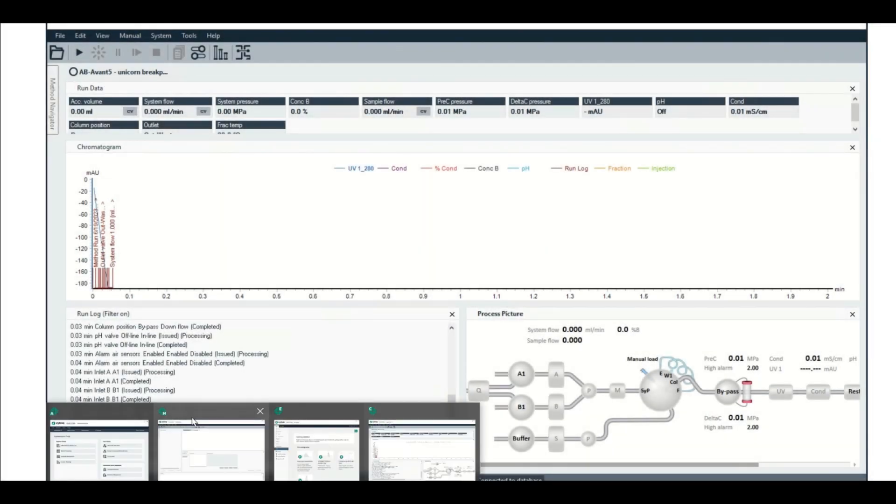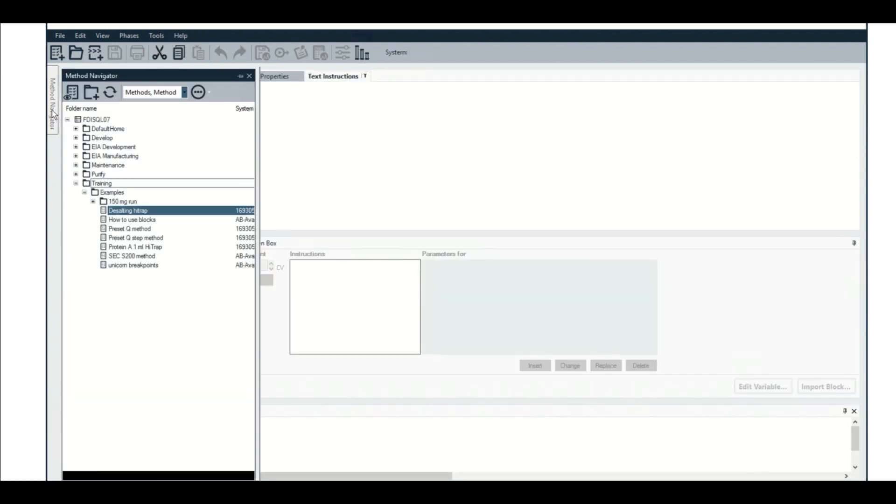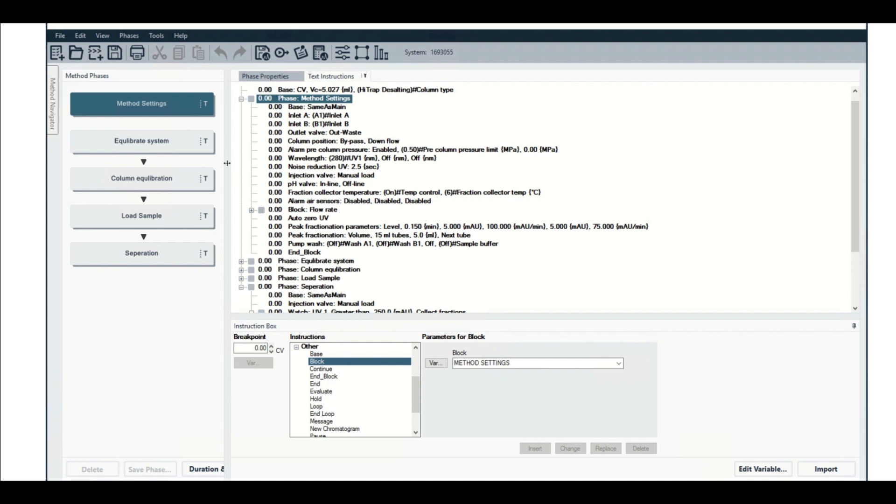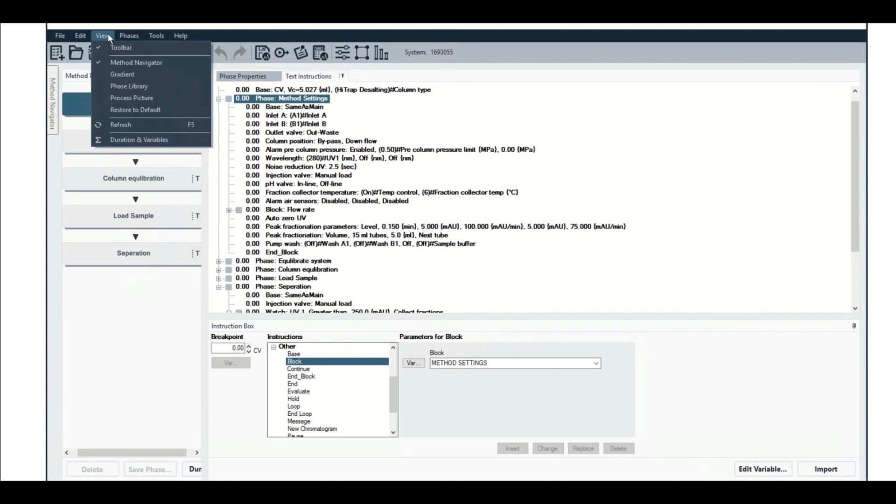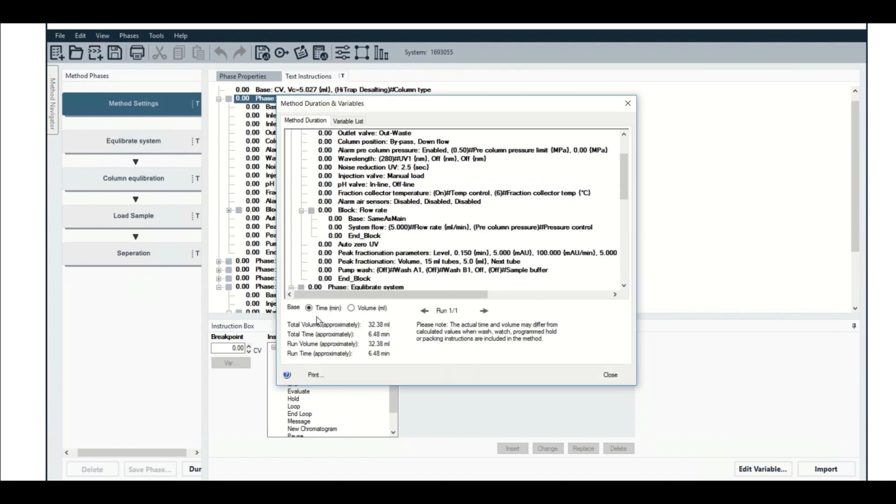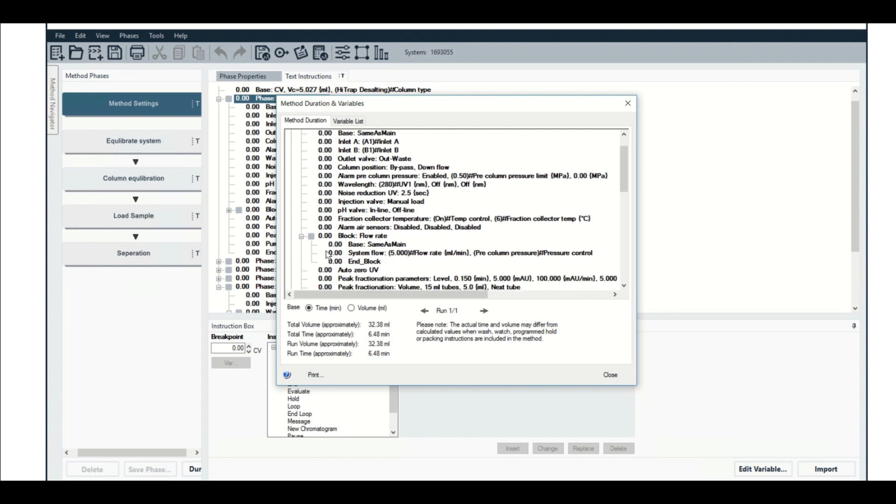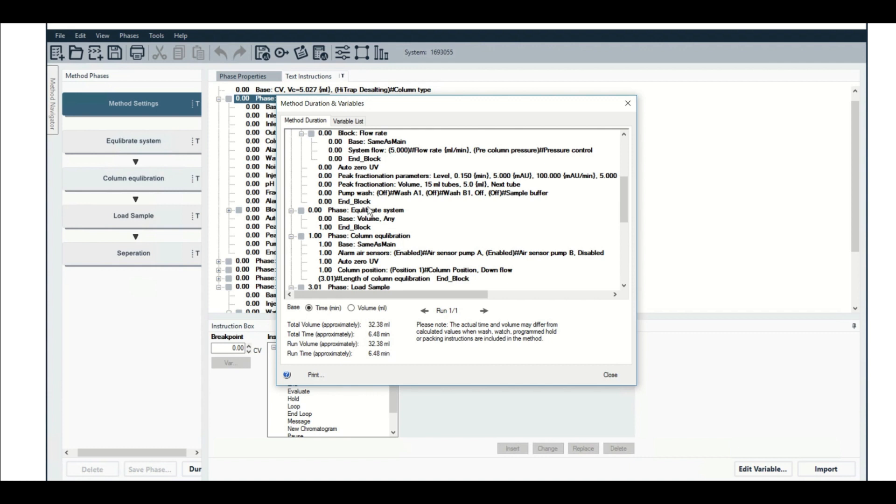So here we are in unicorn. In order to see the duration and variables view, we have to go into the method editor. We're going to open this desalting high trap method, which I've probably have used so much I'm starting to mess things up. I'm going to get rid of this view here so we can just really see things kind of stretched out. Okay. So we're going to go to view and then duration and variables. So here it is. We can see that we're currently looking at base of time right now and more or less the method settings phase. All this should happen at once. Same with the flow rate. The end block should all be read. The first thing that's going to slow us down is this equilibrate system, which is going to be in terms of volume. It's going to be for one mil is what it looks like, which is kind of small. That's not even the volume of the mixer, which is kind of one of the reasons we need to be aware of the Avant flow path.